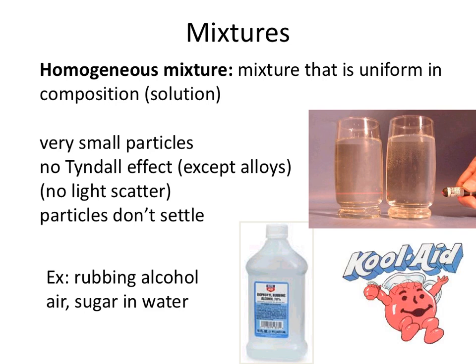The first type of mixture we're going to look at is homogeneous mixtures. Homogeneous mixtures are uniform in composition. Another way we refer to them is that they are solutions — so in chemistry, when we say 'make a solution,' we're talking about making a homogeneous mixture. Some characteristics: they have very small particles, and they don't have the Tyndall effect.